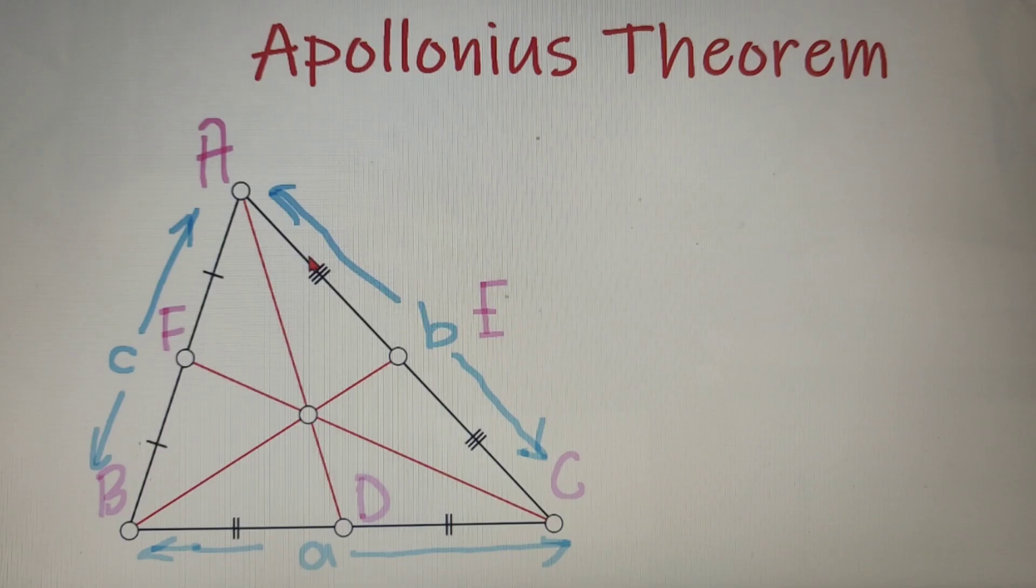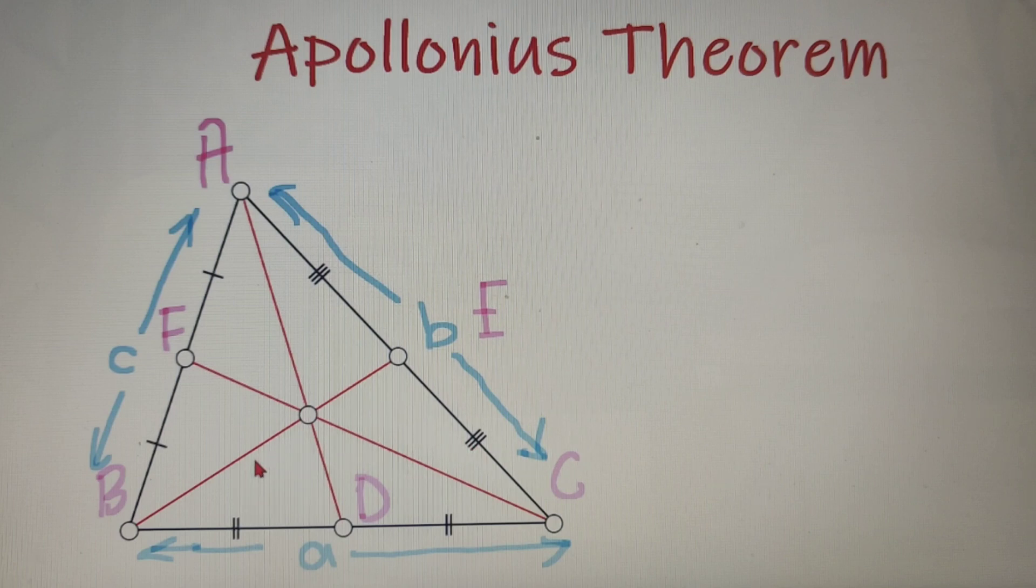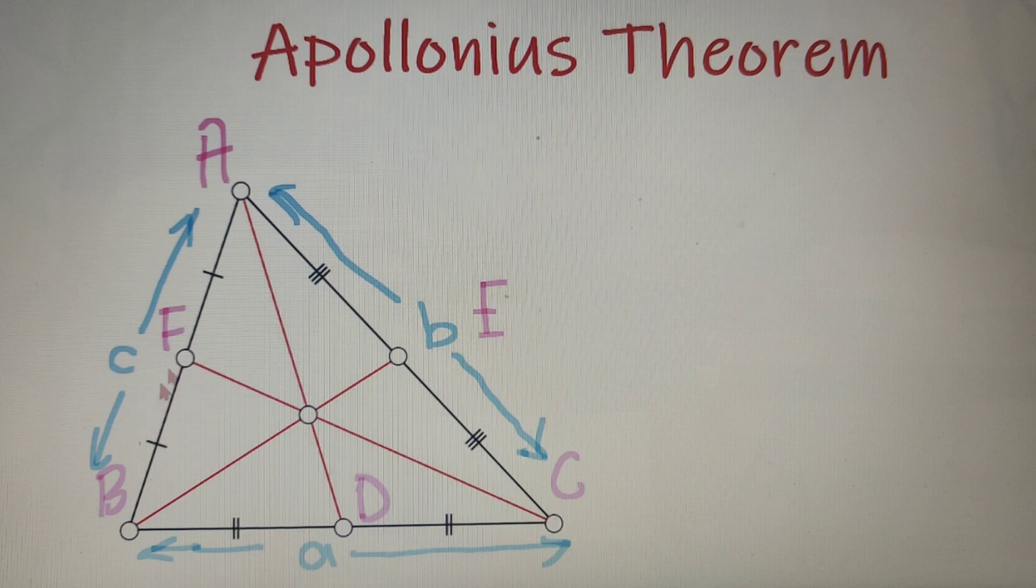So over here, we have taken a triangle ABC with the medians as AD, BE and CF respectively and the length of the sides BC is A, the length of the side AB is C and that of AC is equal to B.